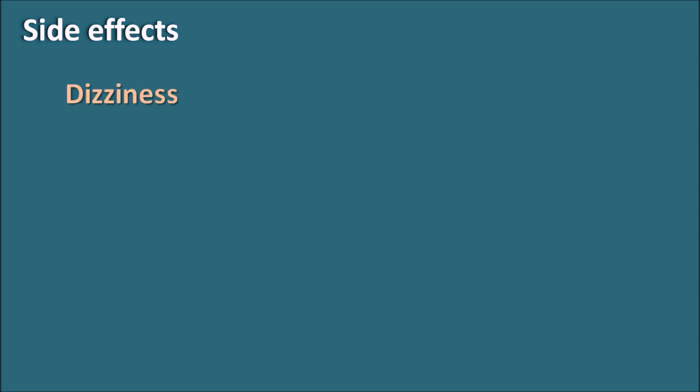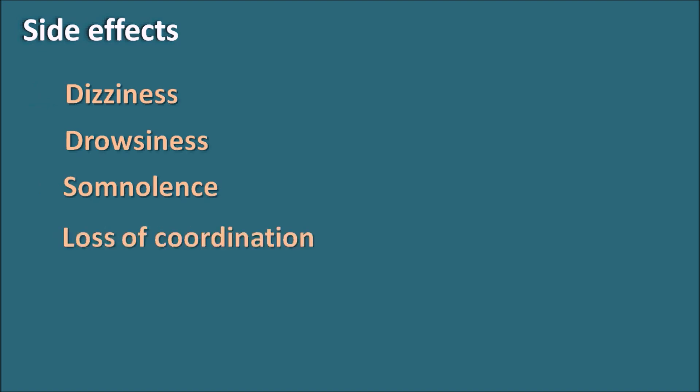Side effects: Gabapentin is safe in overdoses and does not produce significant side effects. It produces mild side effects, and the important ones include dizziness, drowsiness, somnolence, sleepiness, and loss of coordination. These are particularly important because the drowsiness may affect daily activities in patients.